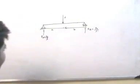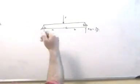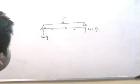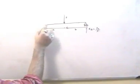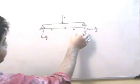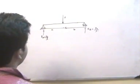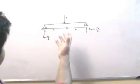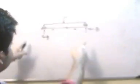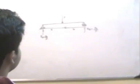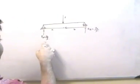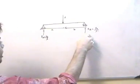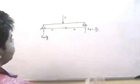Now let us proceed. For example, I have this beam that is loaded with force P, at a distance A from point A and distance B from point B. Then essentially, if we solve the equilibrium equations and we consider that this beam is in equilibrium, then Ra is equal to Pb/L and Rb is equal to Pa/L.